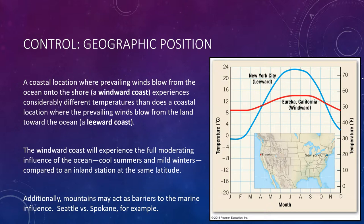The annual temperature range at New York City is 34 degrees Fahrenheit greater than at Eureka. Even though they're both at the same latitude and both near water, winds blow oceanic conditions over Eureka, making it more of a true coastal climate, whereas New York has winds coming off the land instead.